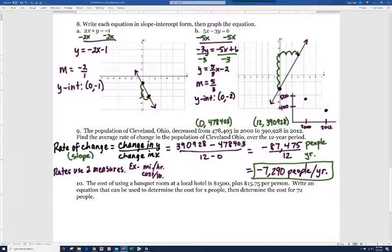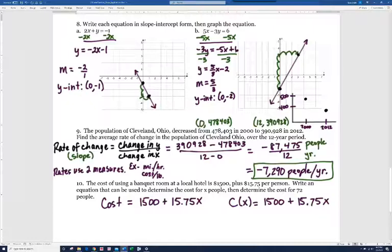So the cost of using a banquet room, so cost, is $1,500 plus $15.75 per person. So the cost equals $1,500 plus $15.75 per person. Now, there's x people, how would I write $15.75 per person? Well, you would actually say $15.75 times x. Now, if x is 1, then you'd be paying $1,500 plus 1 times $15.75. There's just one person. If x were 2, your cost would be $1,500 plus $15.75 times 2. And so that's how it works. I'm actually going to write this as a function. c of x equals $1,500 plus $15.75x.